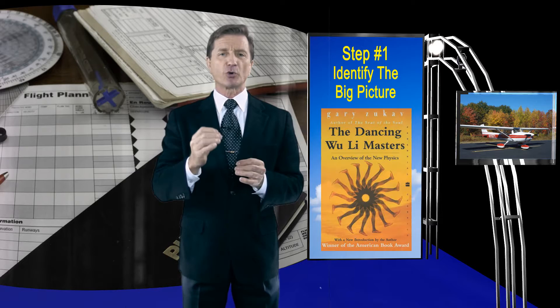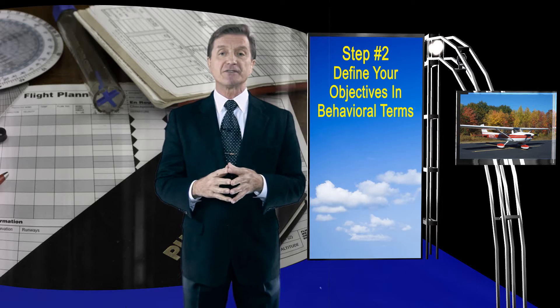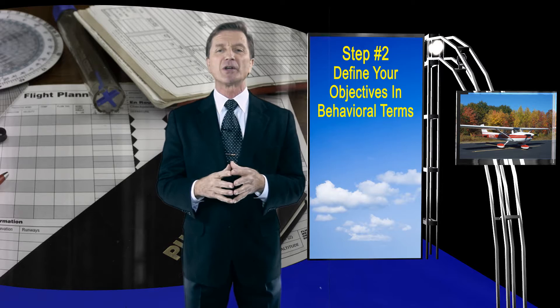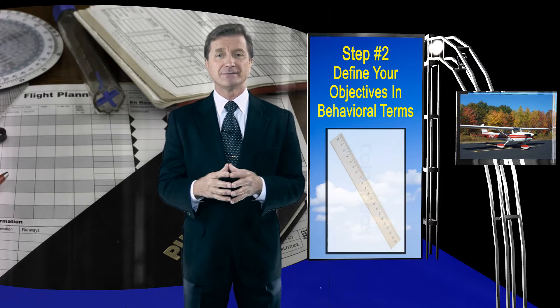Once you've displayed the big picture, it's time to talk directly to the doing portion of your student's brain. Step two is: define your objectives in behavioral terms. Telling your student that he needs to use more right rudder when entering a right turn is, well, asking him to measure without a ruler.